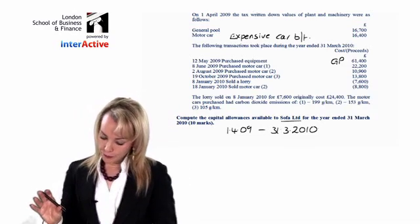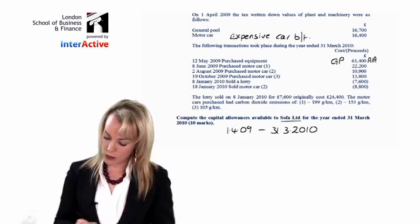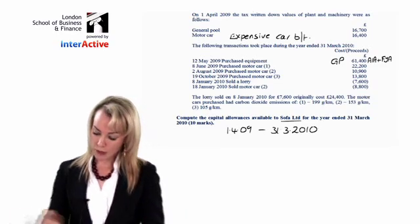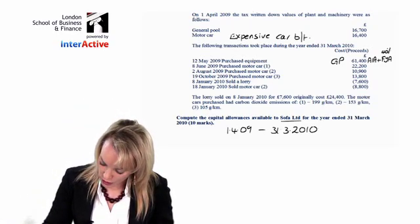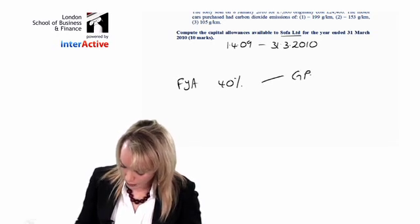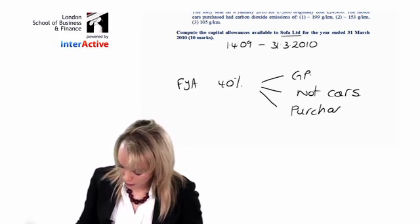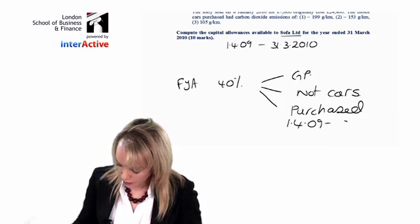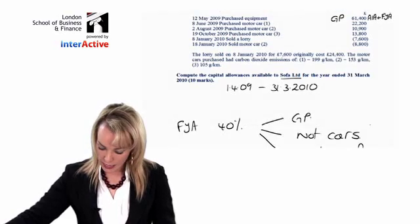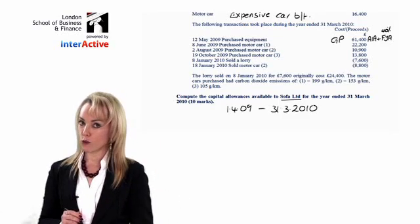In the general pool, the £6,400 equipment will obviously get the AIA, but the AIA will only be £50,000. We'll also get the 40% FYA, because the 40% FYA is available for things in the general pool — not cars — purchased in the special offer period, 1st April 2009 to March 2010 for companies. We can see this item is in the general pool, it's not a car, and it's bought in May 2009, so therefore it can get the 40% FYA.